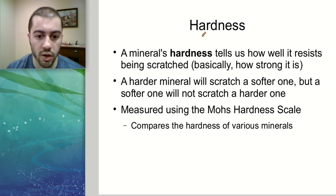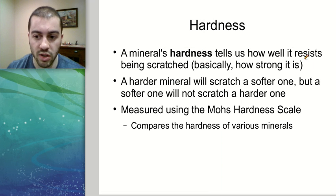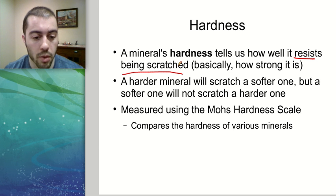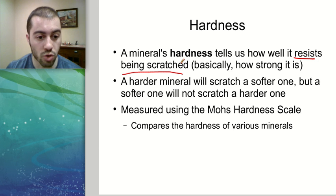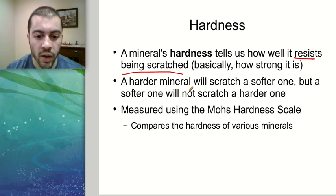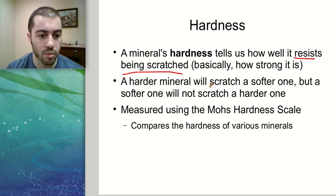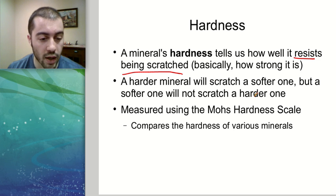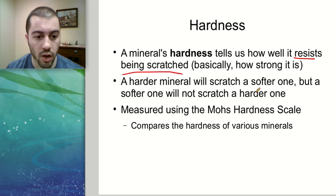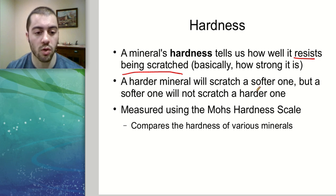The next mineral characteristic is hardness — basically how strong a mineral is and how much it resists being scratched. If a mineral is very hard, it's difficult to scratch with any tool. If you take two minerals and rub them together, the harder one will scratch the softer one. Whichever one does the scratching is harder, and whichever gets scratched is softer.